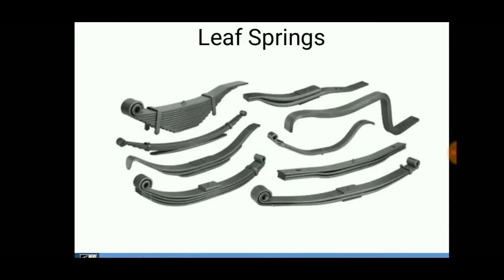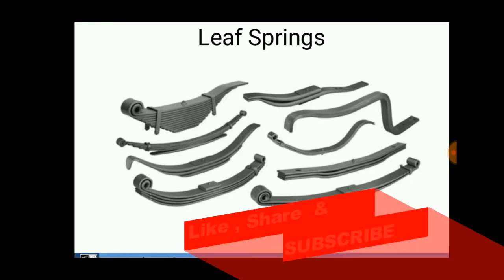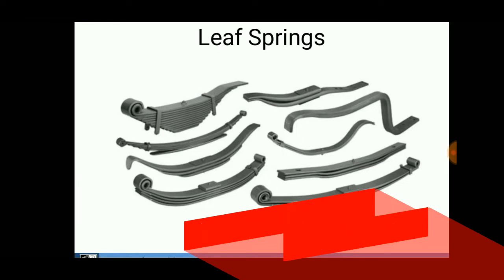Welcome to Engineering Study Materials. Today we are going to discuss the leaf spring manufacturing process. A leaf spring is a component used in automobiles to provide a shock-absorbing agent, vibration damper, and load-bearing agent in vehicles such as cars.